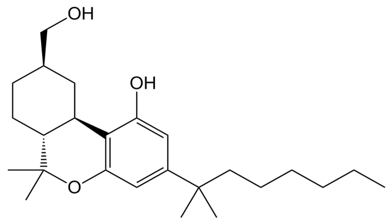Structural classes include but are not limited to: A) 2-(3-hydroxycyclohexyl)phenol with substitution at the 5-position of the phenolic ring by alkyl or alkanol, whether or not substituted on the cyclohexyl ring to any extent. B) 3-(1-naphthoyl)indole or 3-(1-naphthyl)indole with substitution at the nitrogen atom of the indole ring, whether or not further substituted on the indole ring to any extent, whether or not substituted on the naphthoyl or naphthyl ring to any extent.